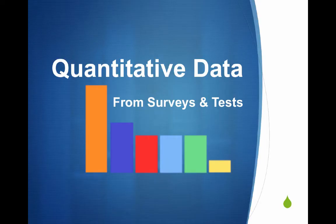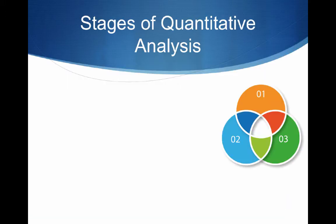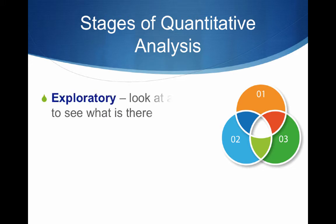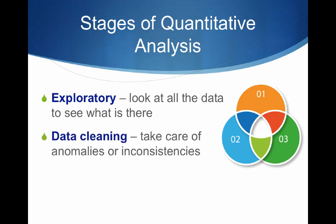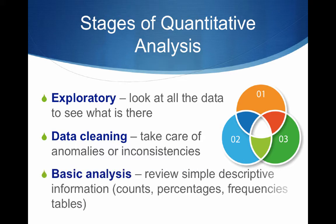We will be talking about quantitative data from surveys and tests. There are certain stages of quantitative analysis, starting with exploratory — this is where you look at all of the data to see what's there. Next is data cleaning, to take care of anomalies or inconsistencies. Then last is your basic analysis, where you review simple descriptive information: counts, percentages, and frequencies on tables.